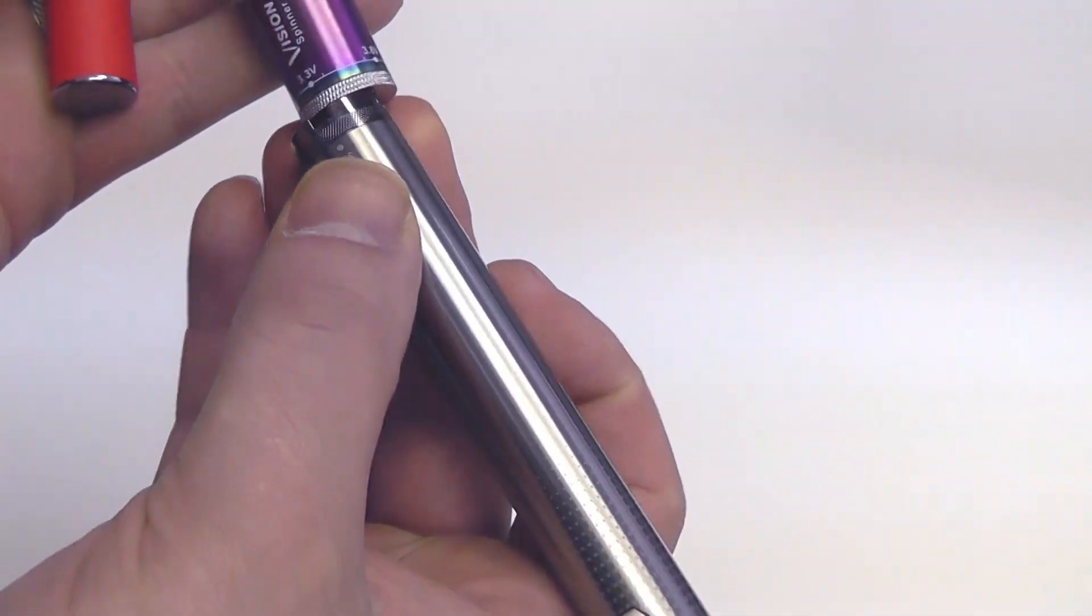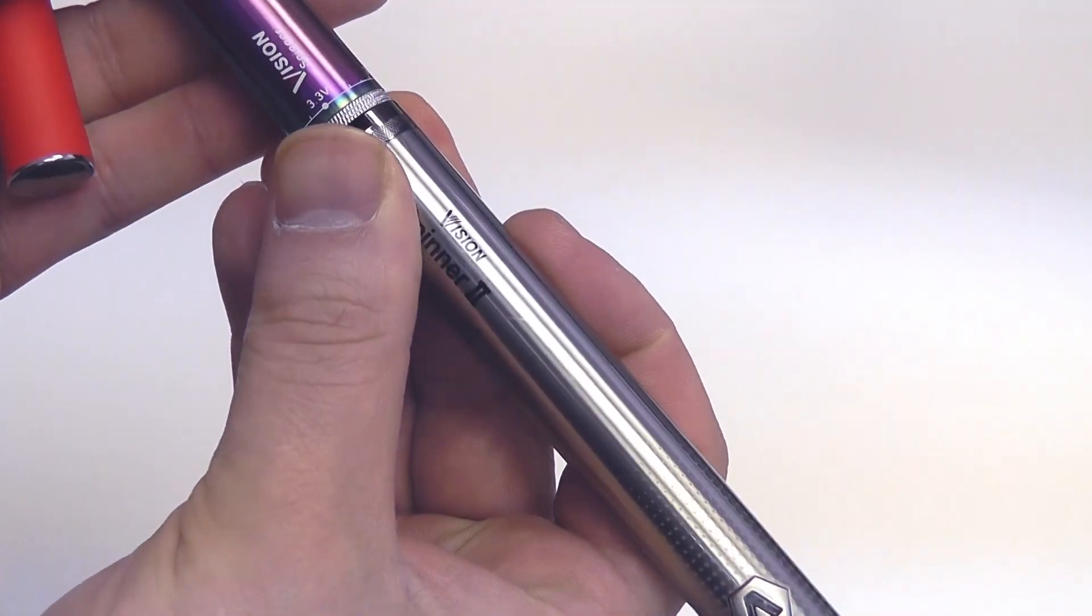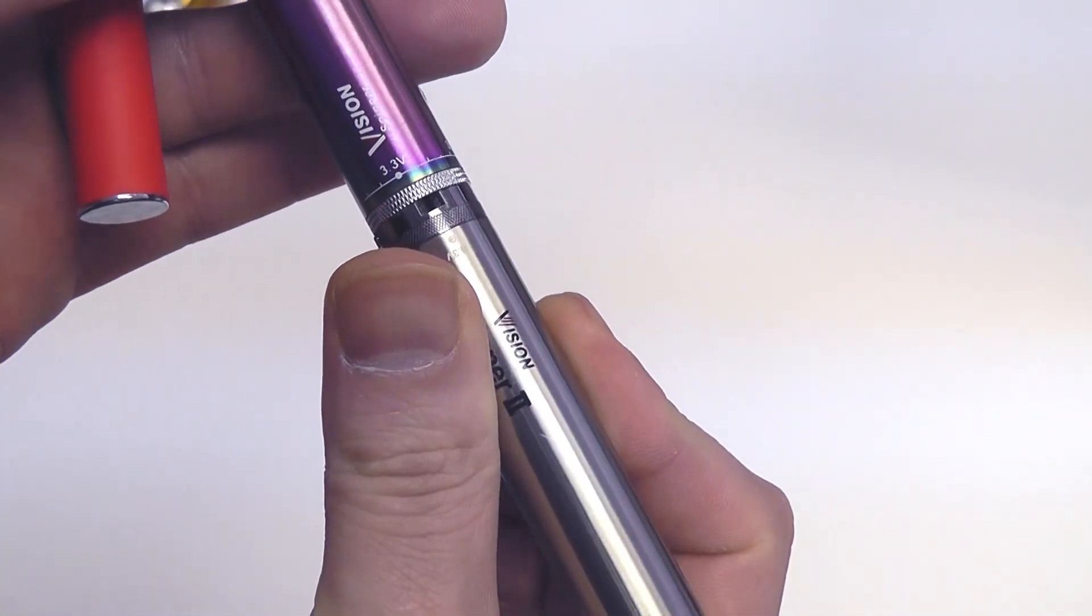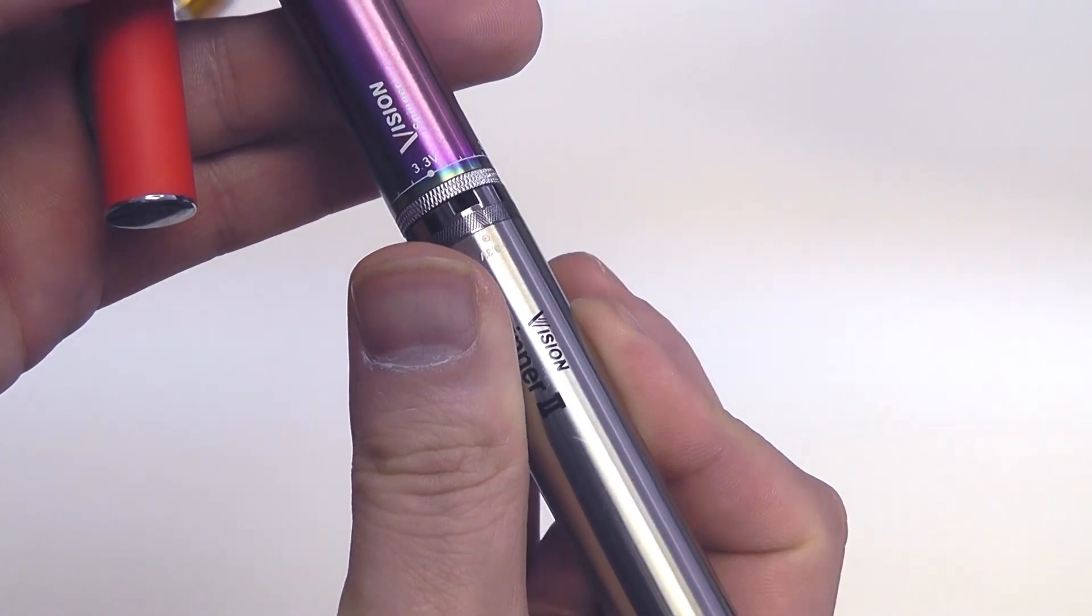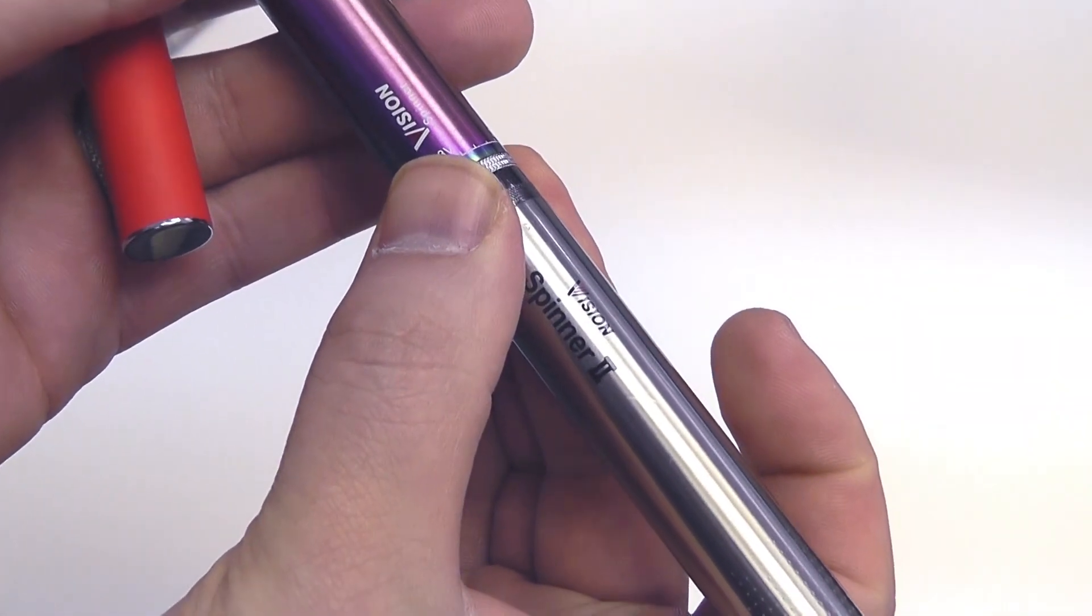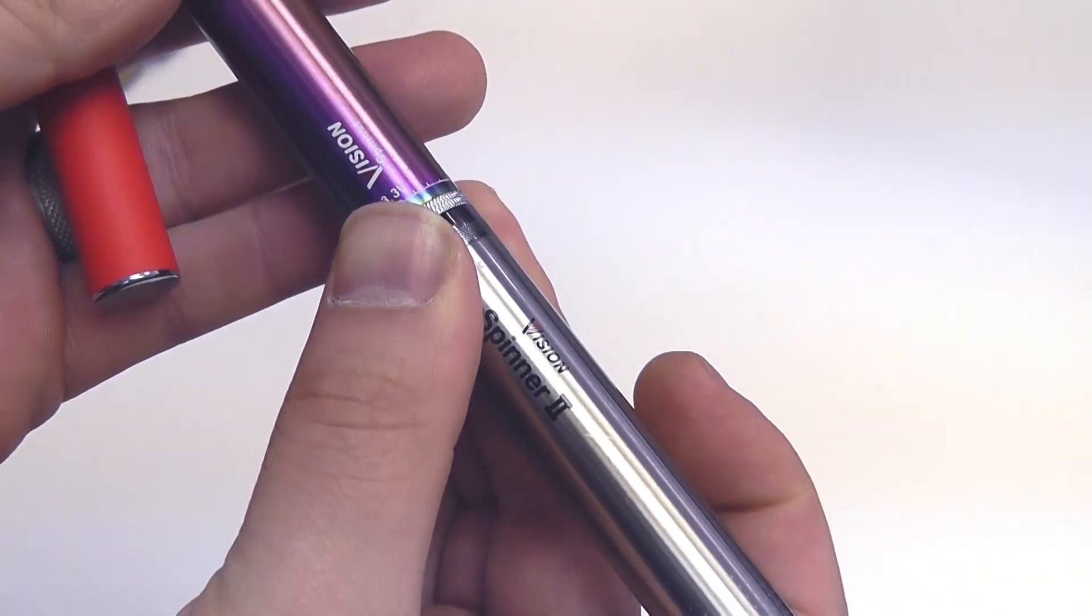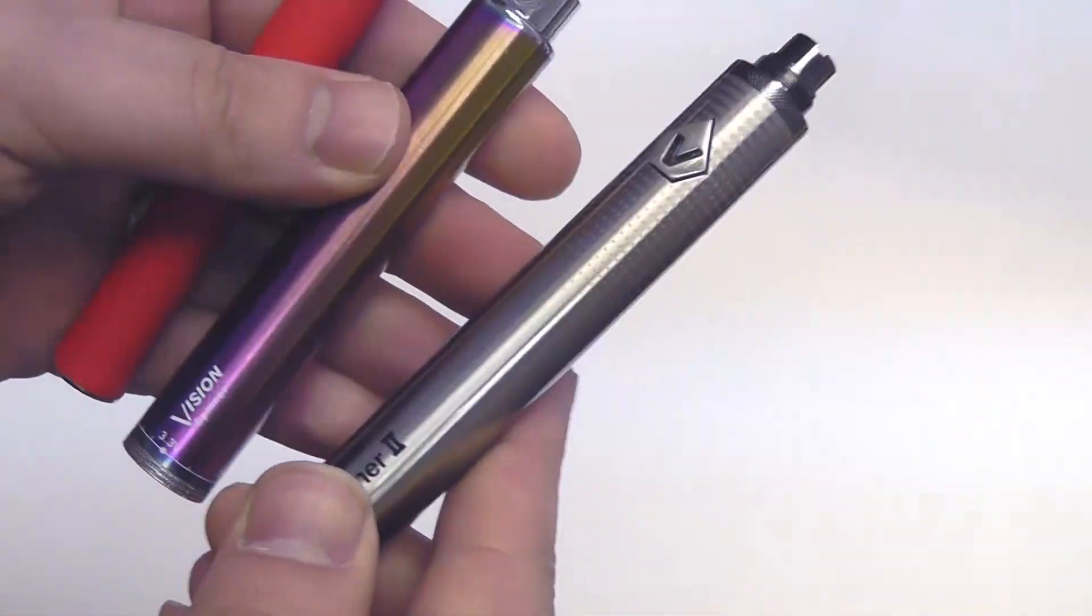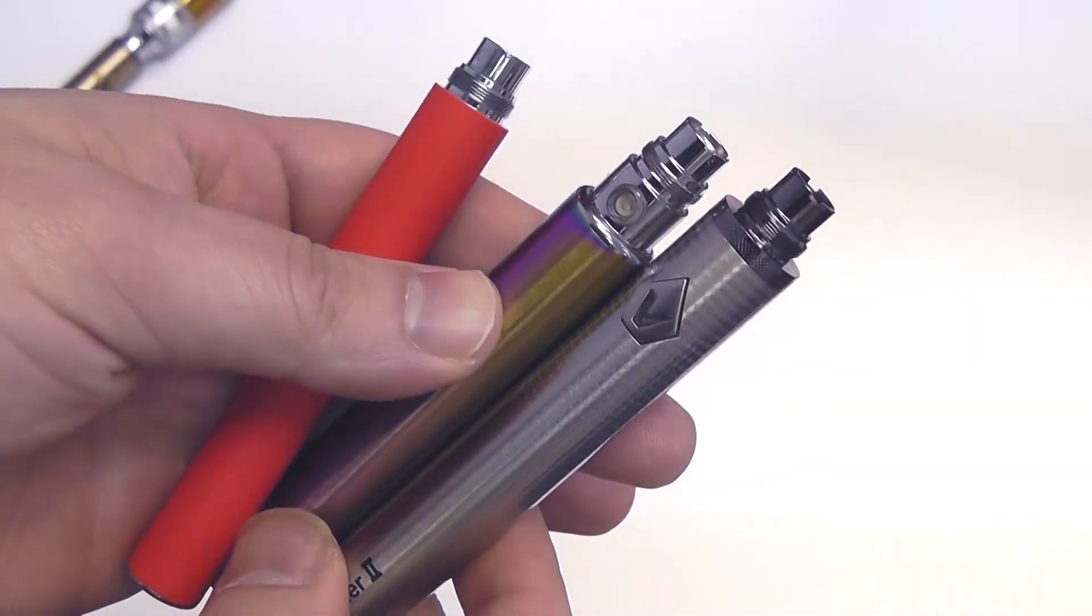In terms of diameter, it is about exactly the same diameter, maybe just a smidge larger. I'm feeling it on both sides and I can't really tell that it's any bigger, so I'm going to say it's actually the same exact diameter as the original Vision Spinner.